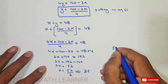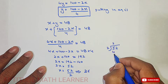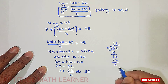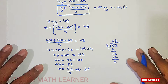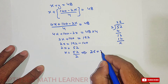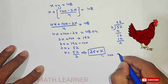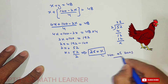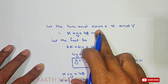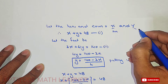So x equals 26 with no remainder. This is the value of x, which represents the number of hens. Recall we let x represent hens and y represent cows, so the number of hens is 26.